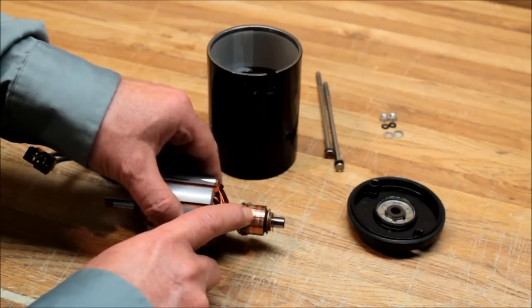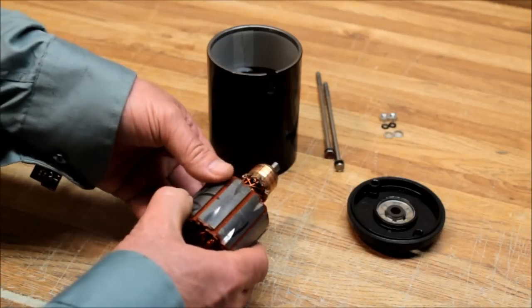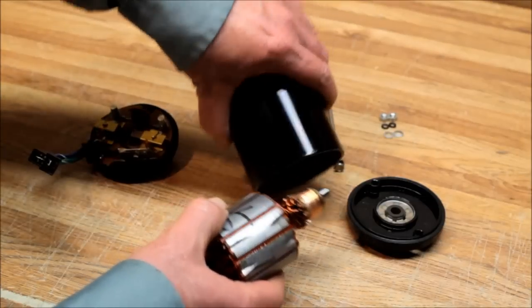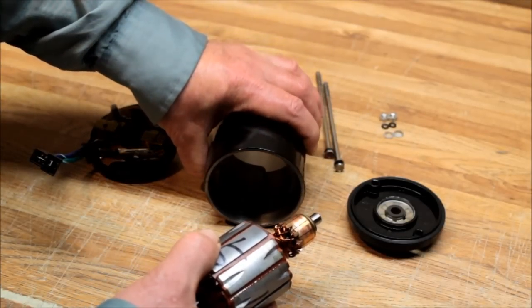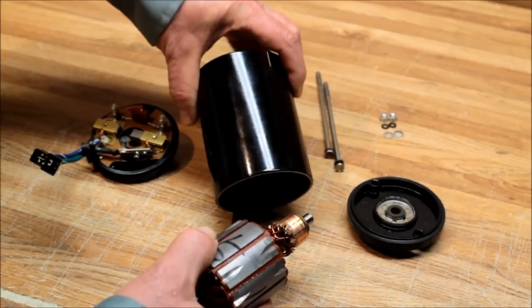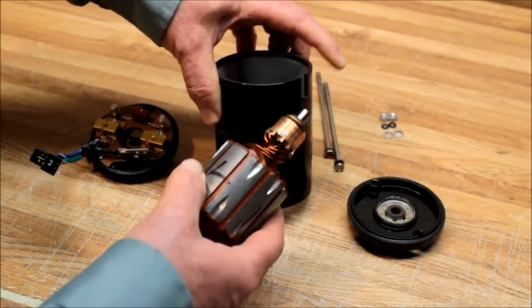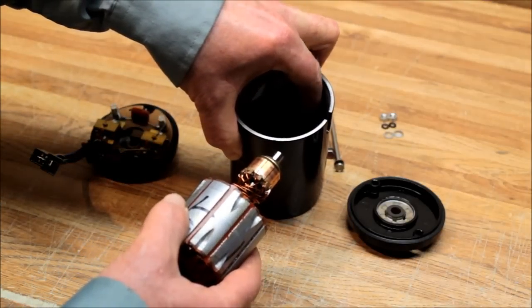Putting these armatures inside the starter cases can be quite a deal because these are real powerful permanent magnets. When this armature goes in, it's going to go in on its own once you get so far. You gotta remember to get your commutator towards the end of the housing that's farthest away.